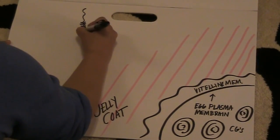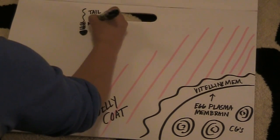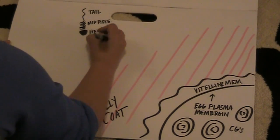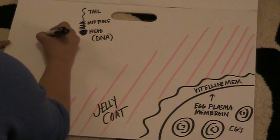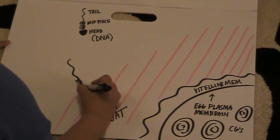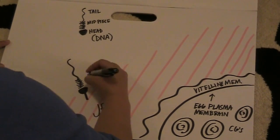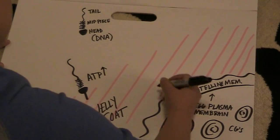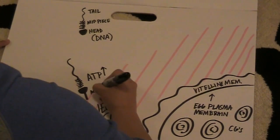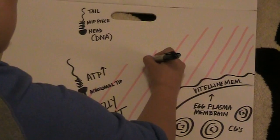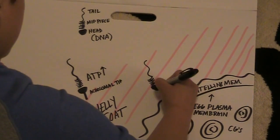Later, for now, the structure of the sperm: tail, mid-piece, head with DNA. Anyway, it comes in contact with the jelly coat. More ATP, it says. So it does it. Longer nose, also known as acrosomal tip. It does it. Then it makes contact.